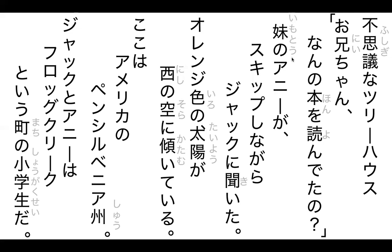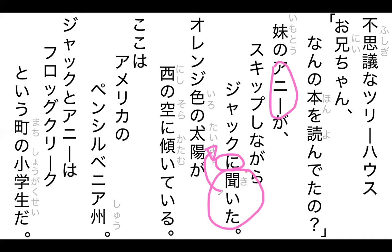The next line starts with いもうと. So いもうと が あにいに — that's 'little sister' and 'big brother.' She's skipping while listening toward Jack. About 80% of the time if you see に after a person it means 'toward' that person, so here it means she's directing a question toward Jack, asking him what book he is reading. Context matters a lot here.